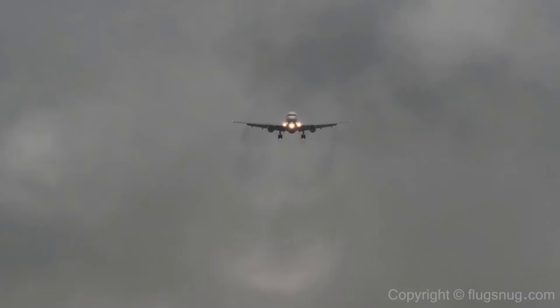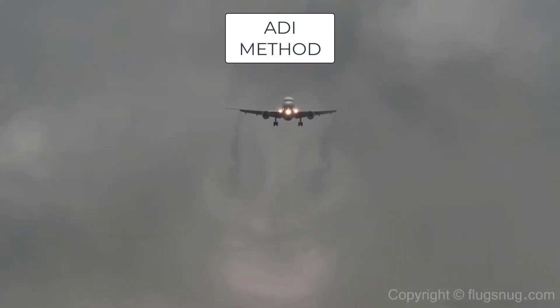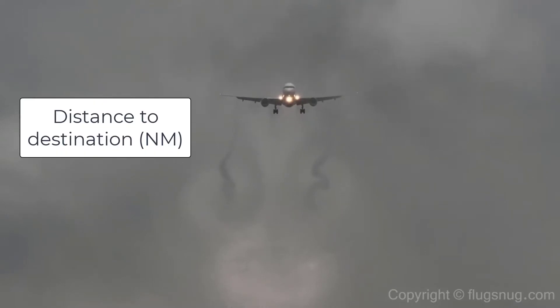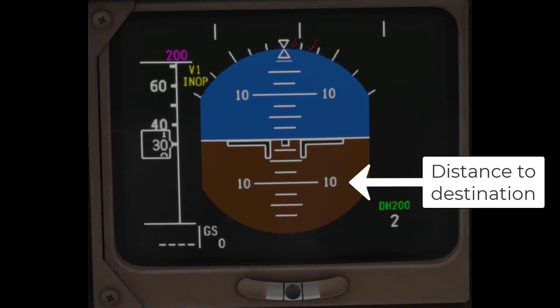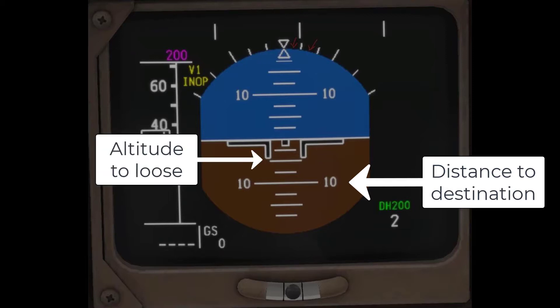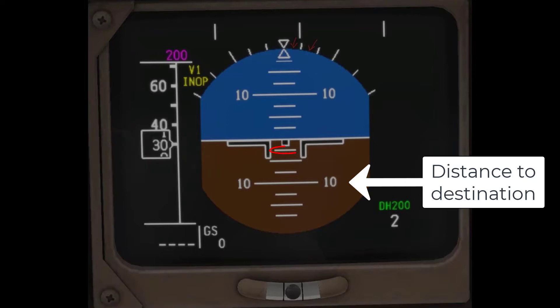When it comes to executing an efficient descent, the primary tool is the ADI method. You'll need to know the distance to your destination and the amount of altitude you need to lose. Put the distance to your destination on the 10-degree nose low reference, then put the altitude to lose in thousands of feet on the ADI as a fraction of the distance. A 2.5-degree nose low descent would be a quarter, 5-degree would be half, and 7.5-degree would be three quarters.